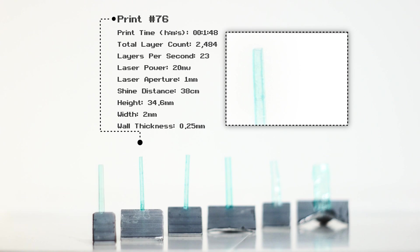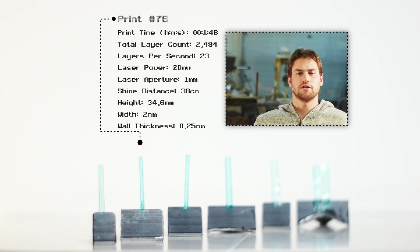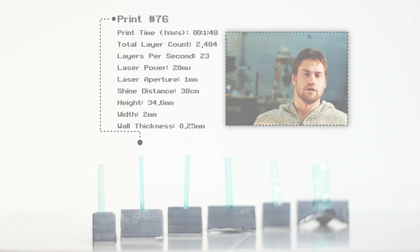In print 76, I really wanted to push the speed at which the printer could go, really push the limits. So I did this print in only a minute and 48 seconds and it's about 34 millimeters tall. We've got about 2,400 layers in this print and we did 23 layers every second. So I had to do a lot of layers per second to keep up with the speed to get that many layers in this print.